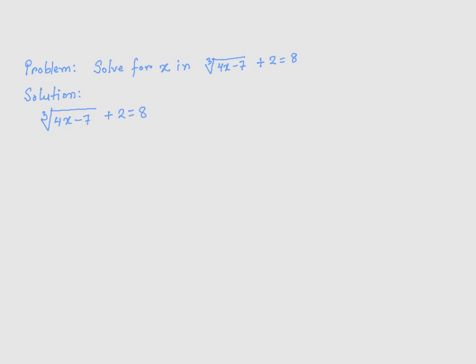So that could be done easily by subtracting 2 from both sides. If I did that, I would get on the left-hand side, cube root of 4x minus 7, and then negative 2 and positive 2 cancel out, and on the right-hand side, 8 minus 2 is 6.